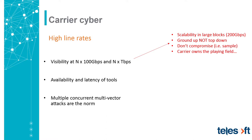For the visibility issue, make sure that whatever security tools you're using, they can scale in sufficiently large blocks for the scale of the networks — typically 200 gig blocks. That allows for a large enough block to move with the expanding line rate of the network, and to cover enough of the network so that no threat goes undetected.